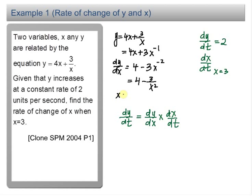When x equals 3, dy over dx equals 4 minus 3 over 3 squared. You have 11 over 3.